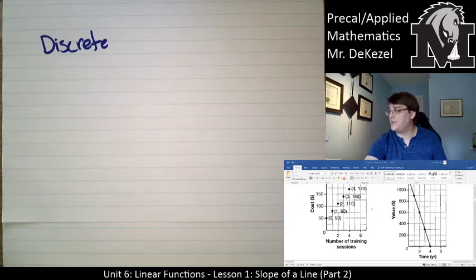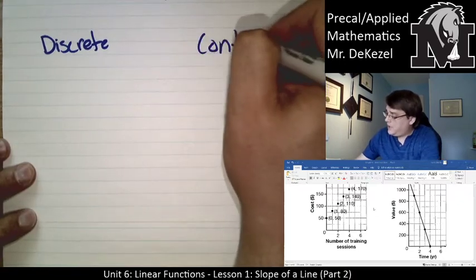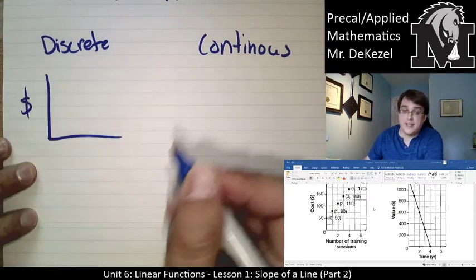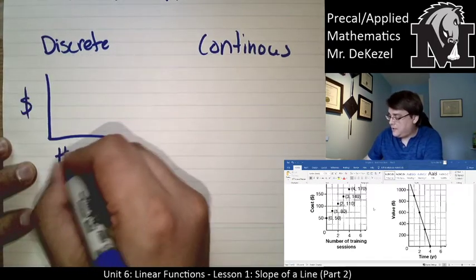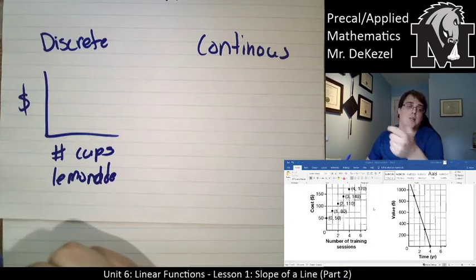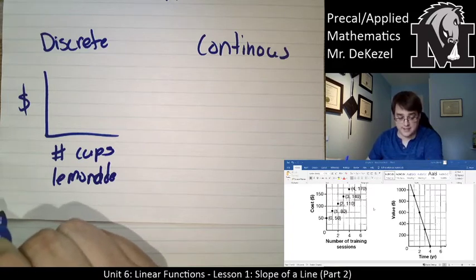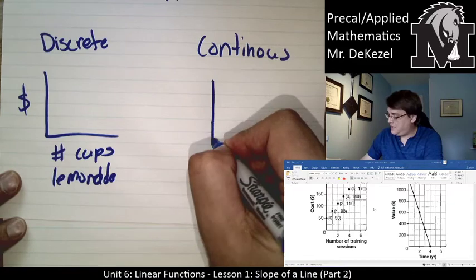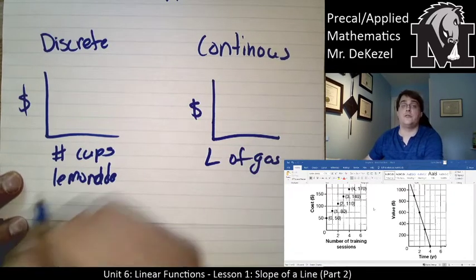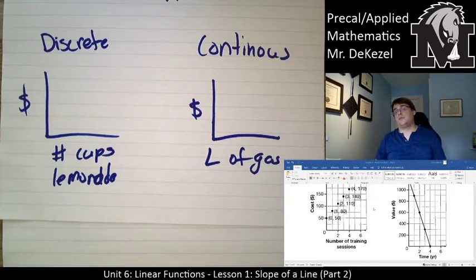Some other examples of discrete and continuous data would be if you've got a lemonade stand. So the amount of money that you would make would be dependent on the number of cups of lemonade. But you can't sell like 0.43 cups of lemonade. That doesn't make sense. Continuous data might be the money that you spend with the liters of gas that you buy. You can buy 1 liter of gas, or 1.72 liters of gas, or 1.78 liters of gas. It is continuous, and that all has meaning.